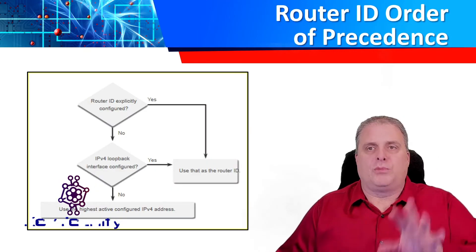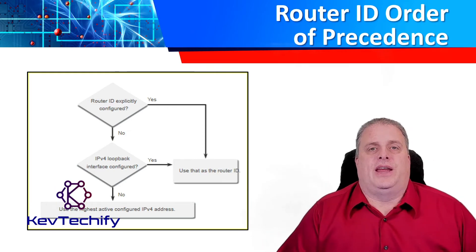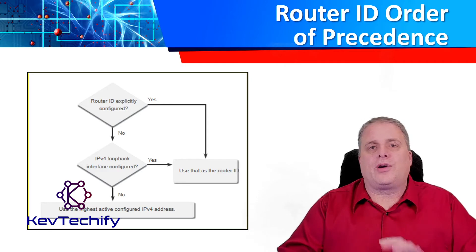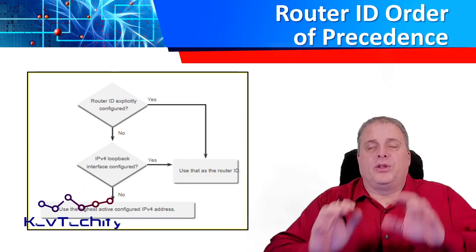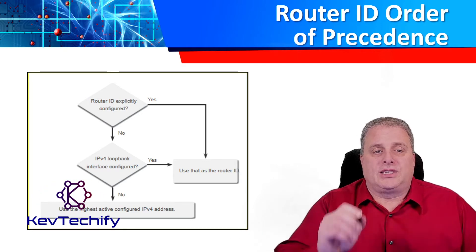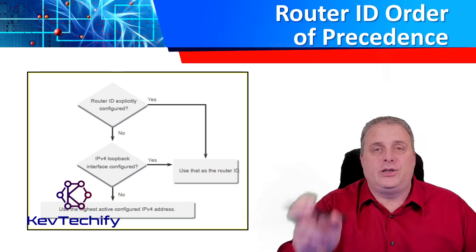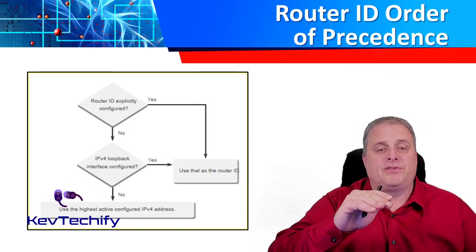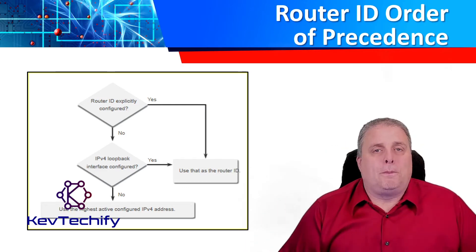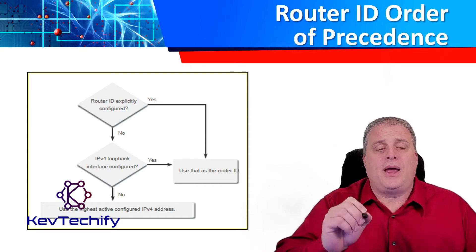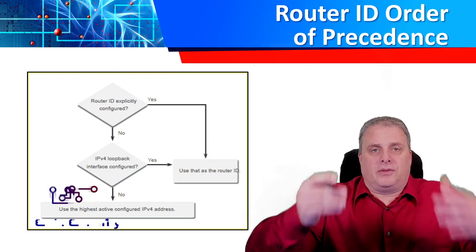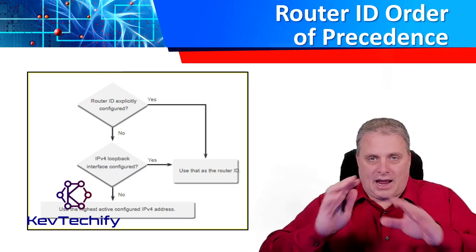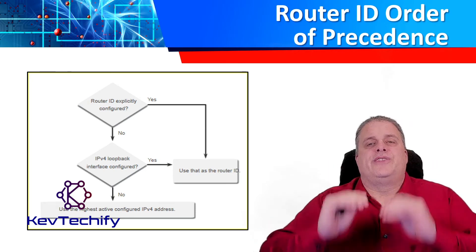There's a three-step process to determine what the router ID is on an OSPF-enabled device. First, is the router ID explicitly configured? If you entered a router ID in your configuration, that's going to be used. If you didn't, it's going to look at the second step: is there a loopback address configured? If there's a loopback address, the router ID will be set to that loopback's IP address. If there is no loopback, then it defaults to using the highest active configured IPv4 address on any interface.